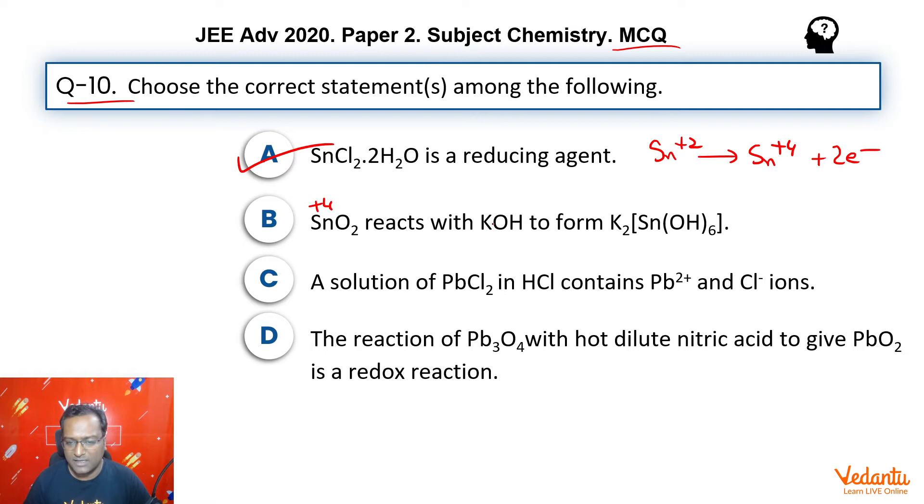SnO2 in +4 oxidation state combines with KOH to form K2Sn(OH)6. So this is also a correct statement. Why? Because SnO2 is amphoteric in nature. So amphoteric oxides can dissolve in base forming complex systems.